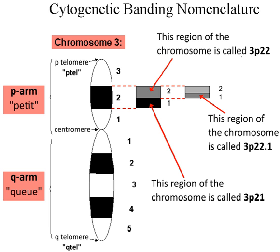The shorter arm of a chromosome is termed the p-arm, while the longer arm is the q-arm. The chromosomal locus of a typical gene, for example, might be written 3p22.1.